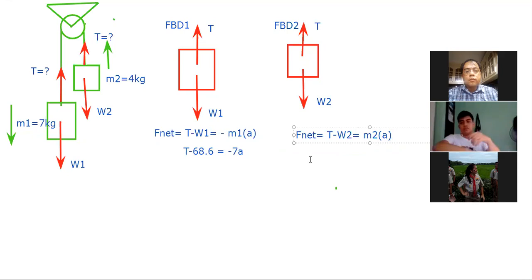So again, now simplifying our equation, what will be our equation now? That's T minus... Weight two is 39.2, sir. Then M2 is 4, 4A. And we will not write a negative sign before 4 because again it is going up.